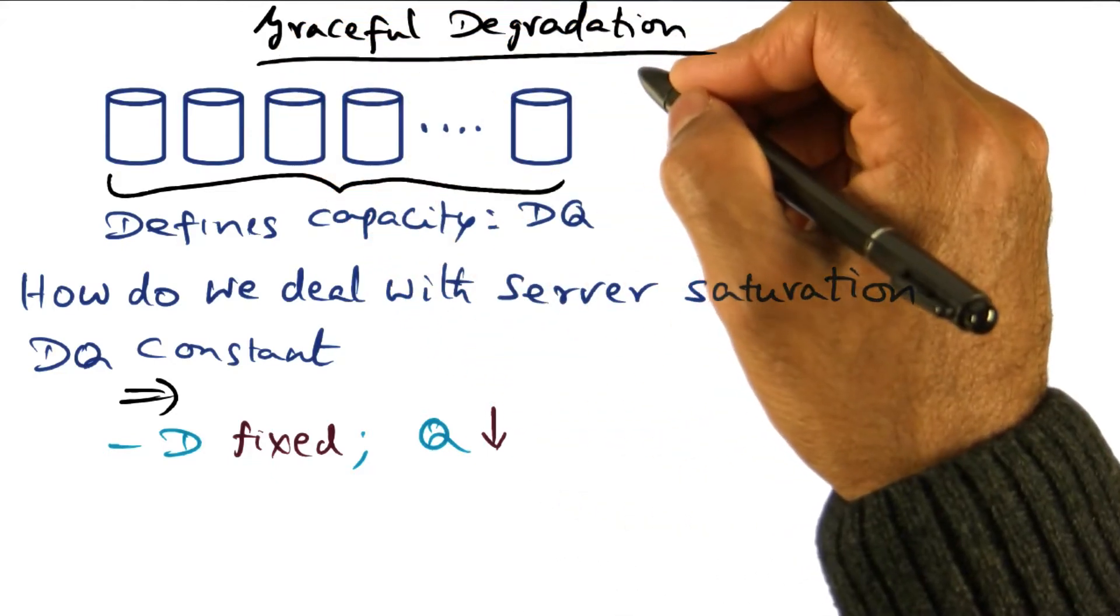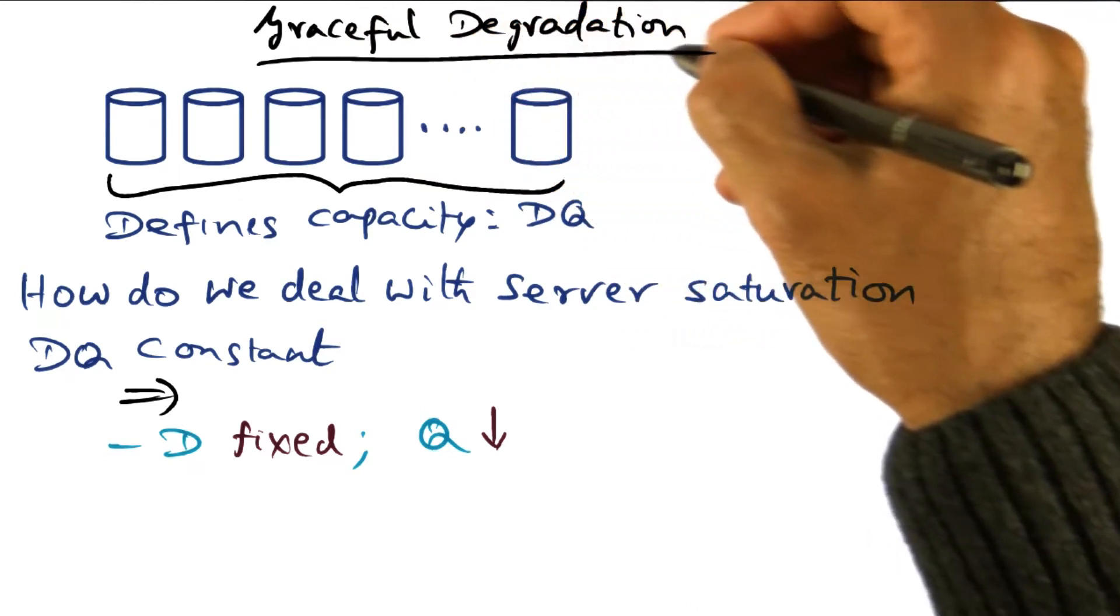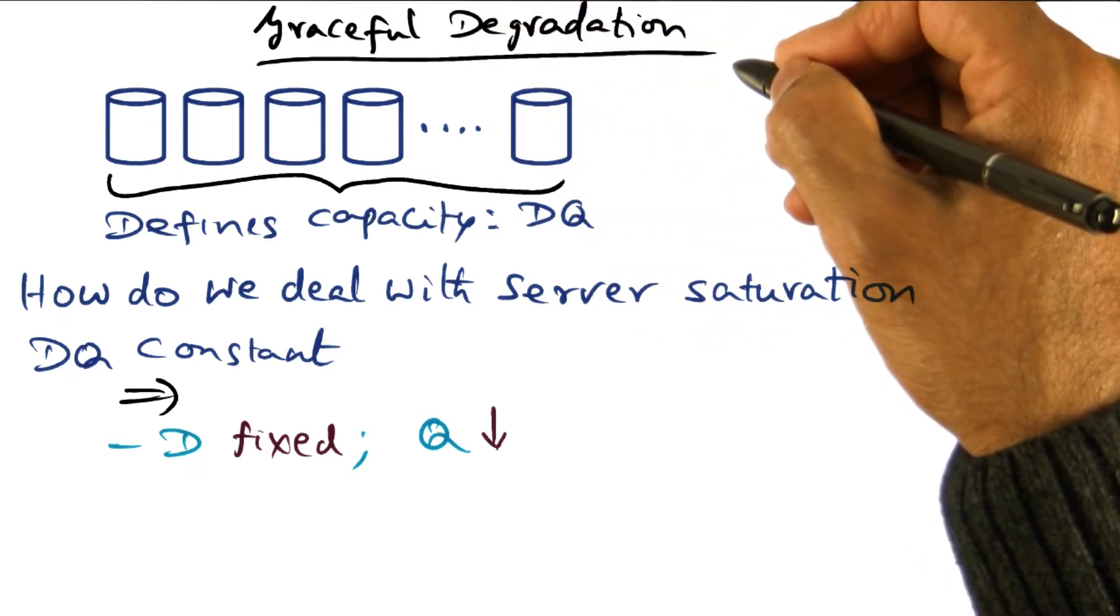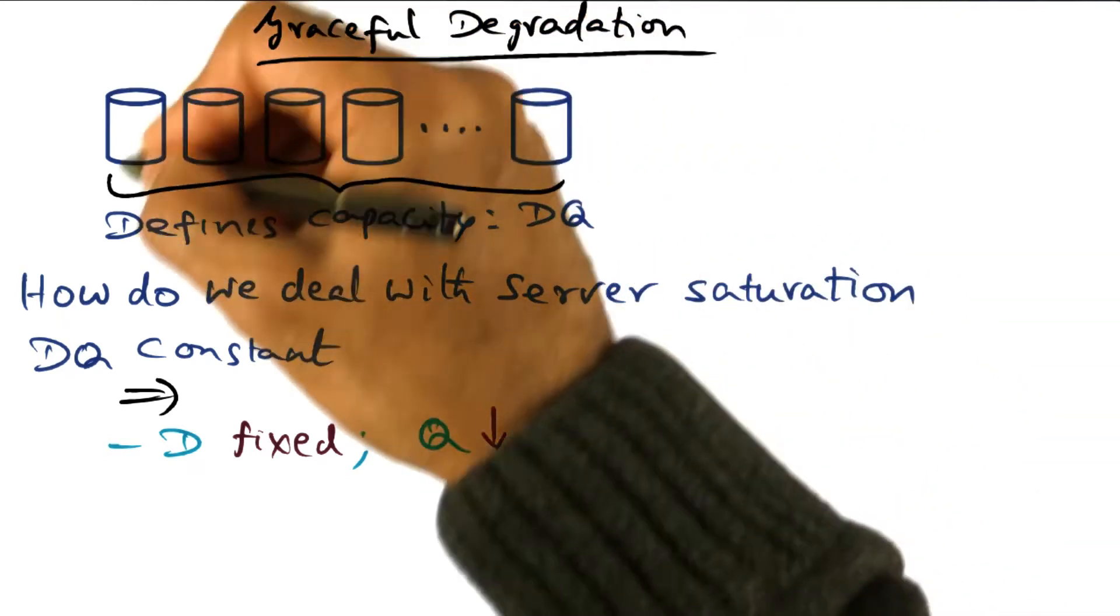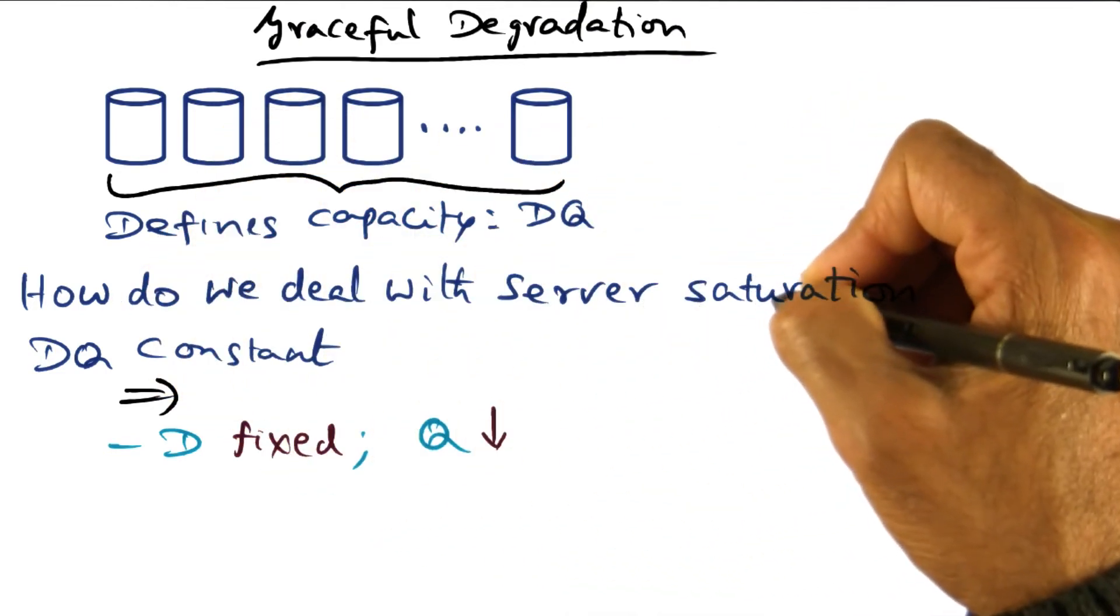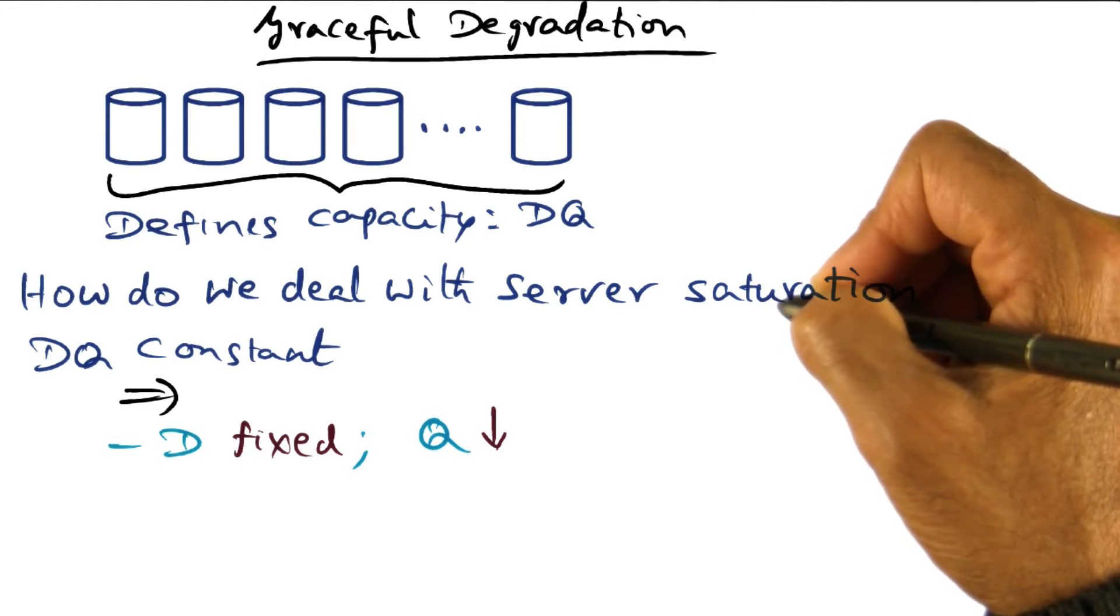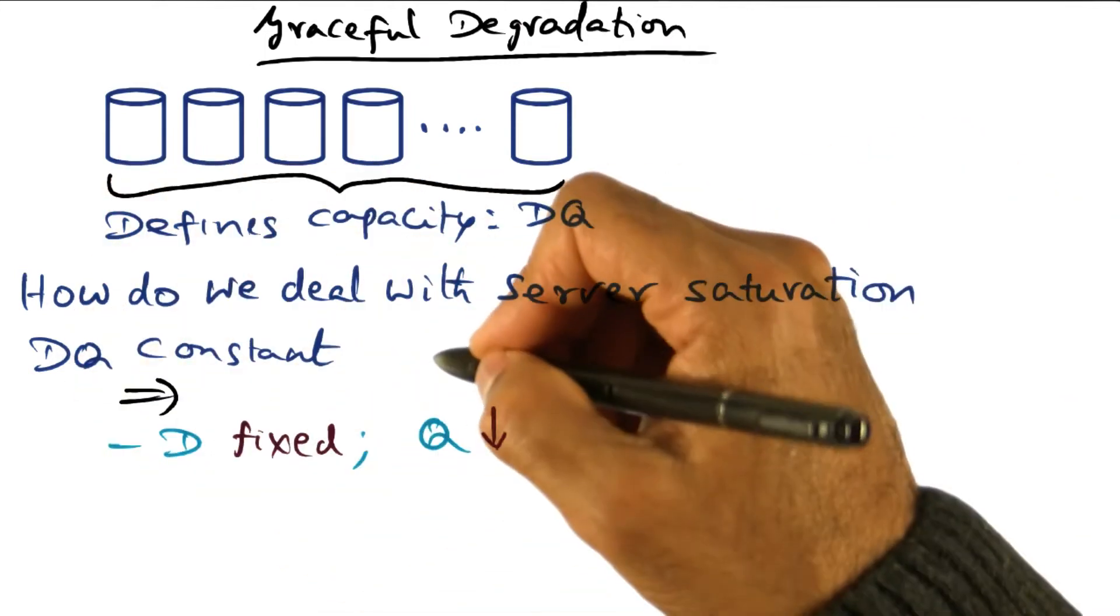And the DQ principle is also very useful for managing graceful degradation of service. So DQ defines the total system capacity. So if a server is saturated, meaning that we have reached the limit of the server in terms of DQ.